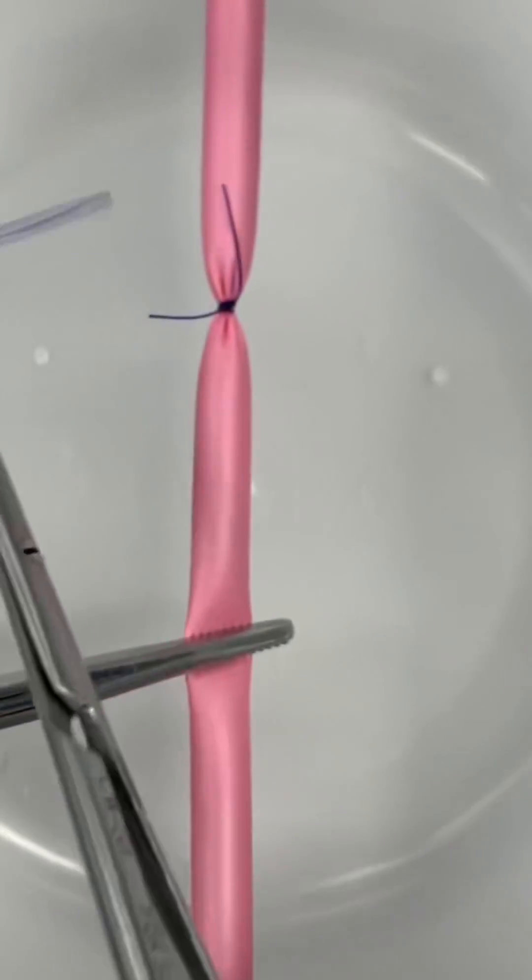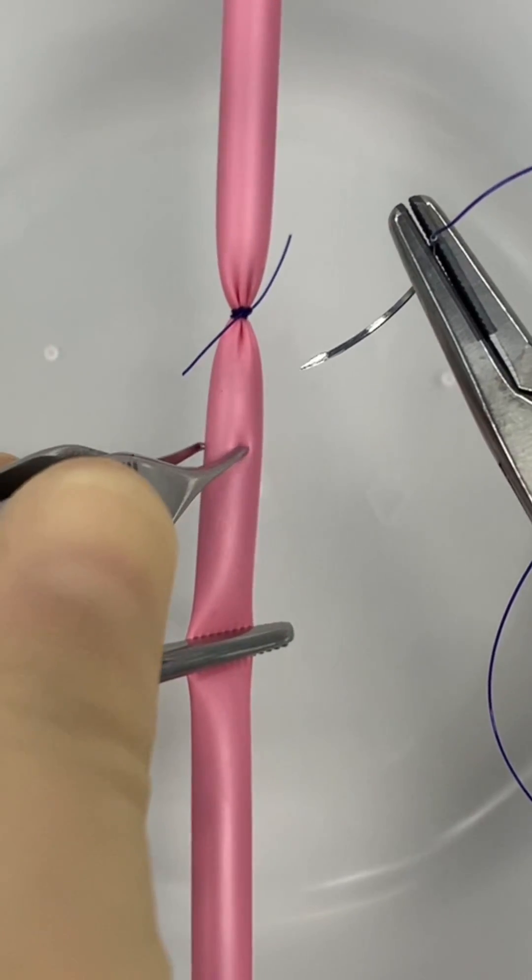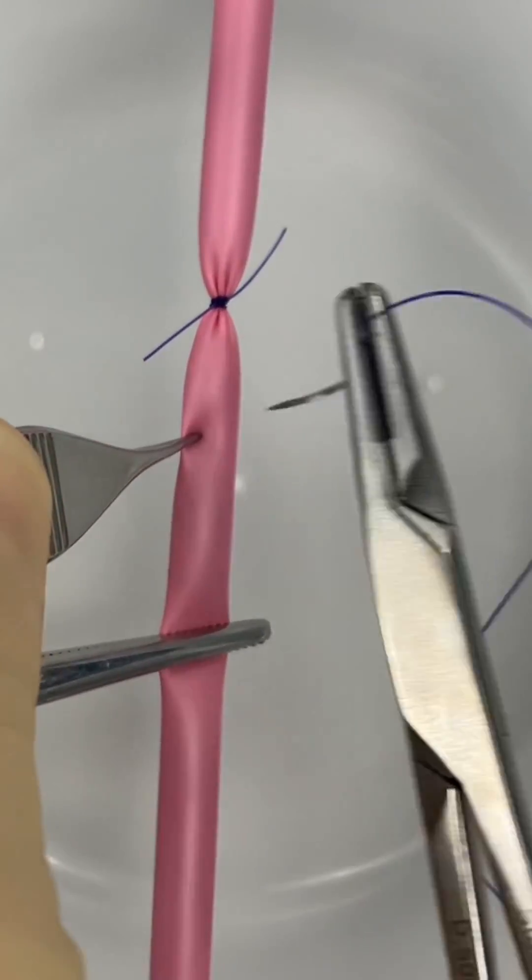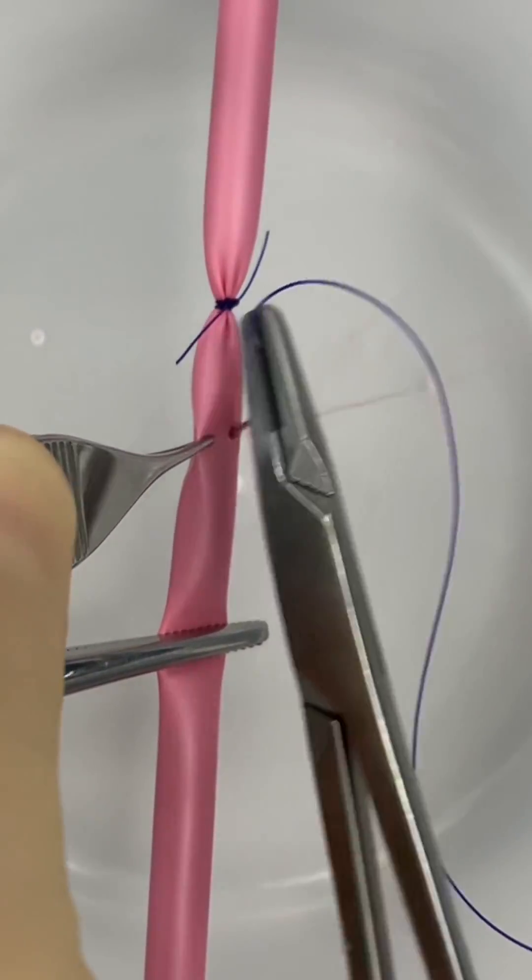Now that you've constricted blood flow, you can complete the ligation with the transfixing ligature. This is placed distal to the constrictor knot because it involves going through the vessel with a needle.